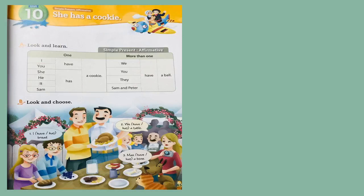Now let's turn to page 45. In the first column you can see: I, you, she, he, it — and they put 'have' and 'has'. We use 'have' with I, you, we, and they, and 'has' with he, she, and it. This form shows only the positive, which we call the informative form. You need to look and choose — we have number one, number two, and number three. Choose the correct one related to 'have' and 'has'. I give you five minutes to do it.